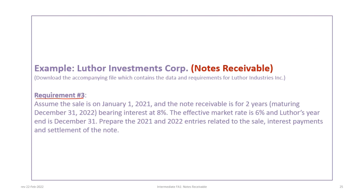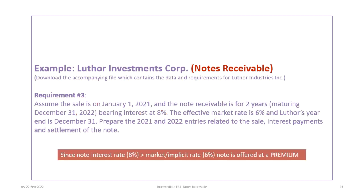Finally, onto requirement three. We assume the sale is on January 1st, 2021. It's a two-year note maturing in 2022, but this time interest-bearing at 8%, while the effective market rate is still 6%, so we continue to discount at 6%. Luther's year-end is December 31st. Since the note rate of 8% exceeds the market rate of 6%, this note is offered at a premium.